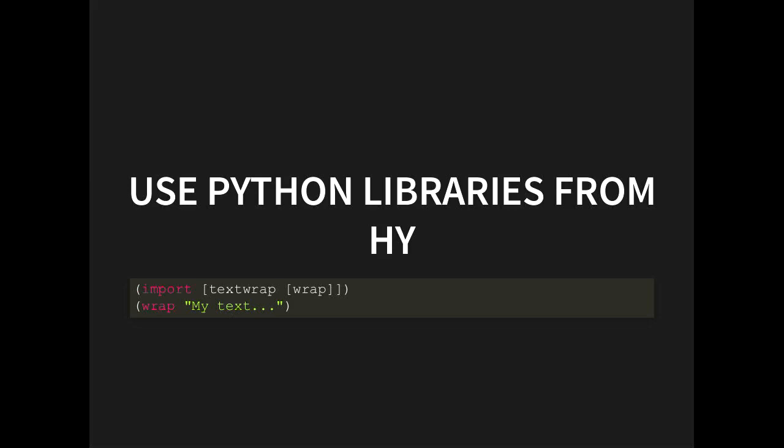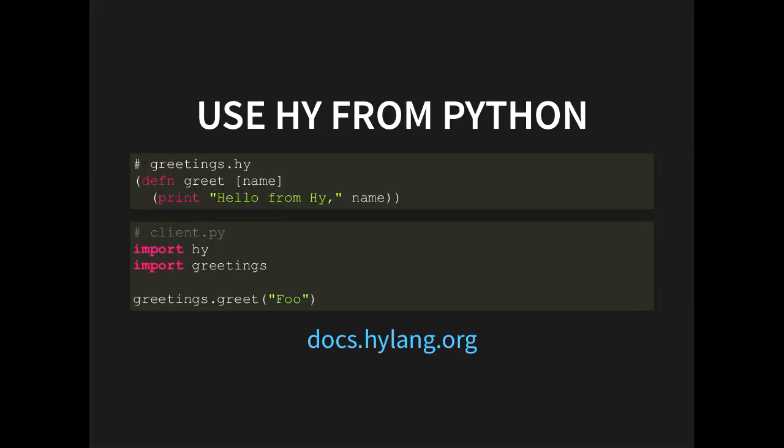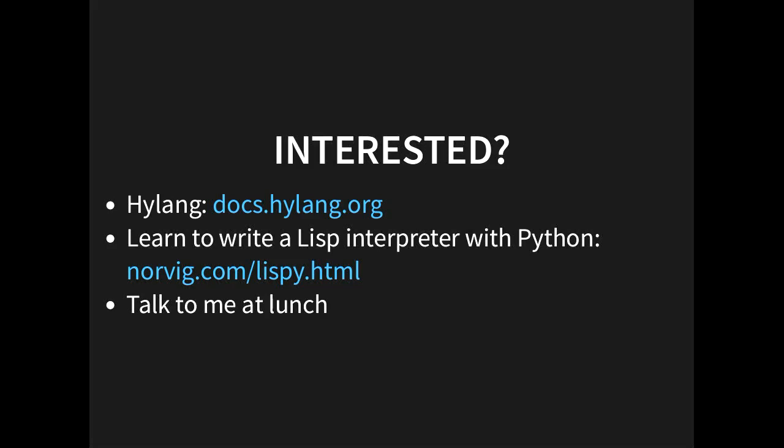With Hy, you can use all your Python libraries directly, and you can even write a Hy file and import those functions and use them from Python — so you can share your Hy code with other Python developers and they won't even know. Plus they have a great mascot, Cuddles the Cuttlefish. If this is interesting to you, look at the docs. Also, if you're just interested in Lisp in general, Peter Norvig has a great 'How to Write a Lisp Interpreter in Python' project — about 100 lines of Python — which is really interesting if you want to learn how programming language interpreters work. And if you want to talk more about Lisp, come find me at lunch.